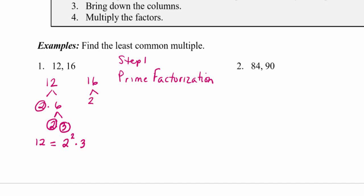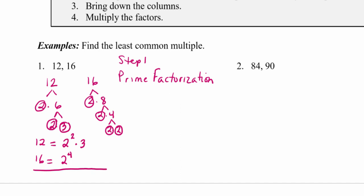Now we do the same process with 16. Sixteen is 2 times 8, 8 is 2 times 4, and 4 is 2 times 2, giving us four 2s. So 16 is 2 to the fourth. I'm going to line up these two numbers so the 2s are under each other. Notice that 12 has a 3 but 16 does not, so I put an empty spot there for 16.